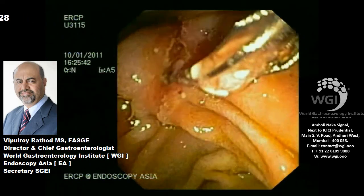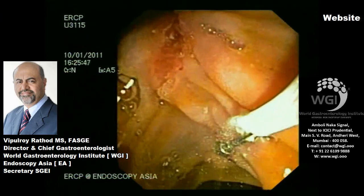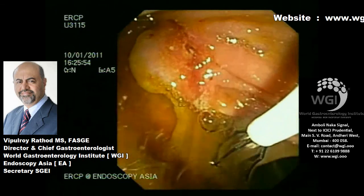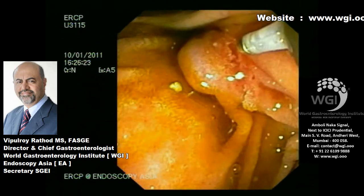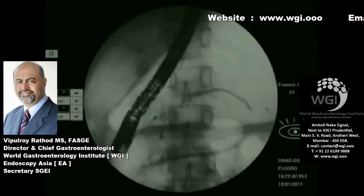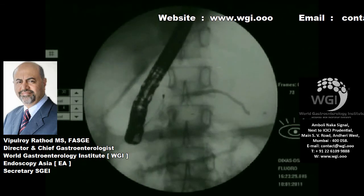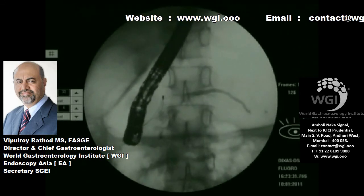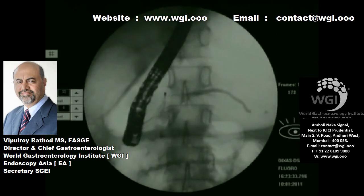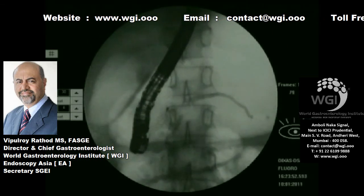Some concrements did come out. We feel this patient will need a formal ESWL. We are passing the Dormia again to continue clearance. You can see a large radiopaque stone between the accessory duct and the main pancreatic duct visible from the minor papilla.